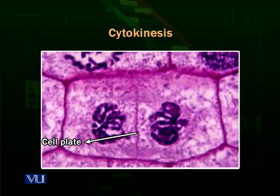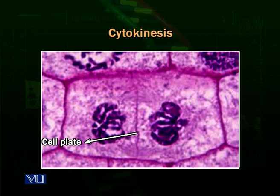After karyokinesis, nuclear division is complete and the cell has to divide into two cells. Cytokinesis is different in animal and plant cells. In plant cells, a plate or line is formed in the center of the cell. This cell plate is formed from materials produced by the Golgi bodies. These materials collect in the center and the cell plate starts growing towards the sides of the cell, ultimately joining with the cell membrane and dividing the cell into two. The cell plate contains components of the cell membrane and cell wall to separate the cells.